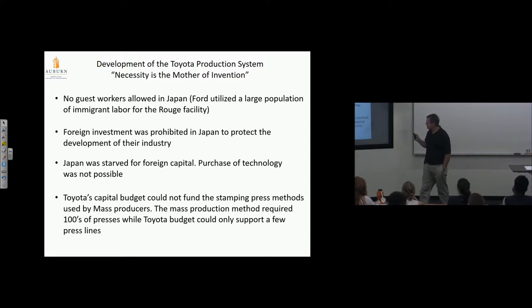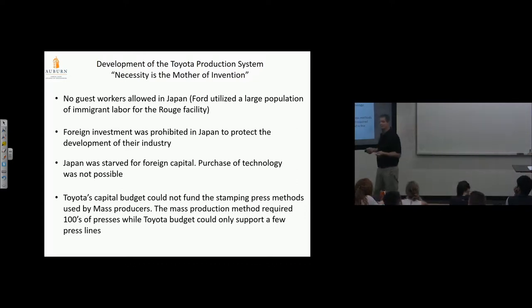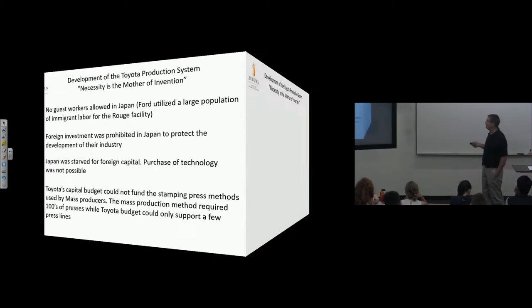Toyota's capital budget could not fund the stamping press methods used by mass producers. Mass production required hundreds of presses; Toyota could only afford a few press lines. Imagine they don't have large operations of presses stamping the same thing over and over—just a handful of presses. They need to change these over rapidly to get full use. Detroit didn't do that, so they have to come up with a method—that's SMED.